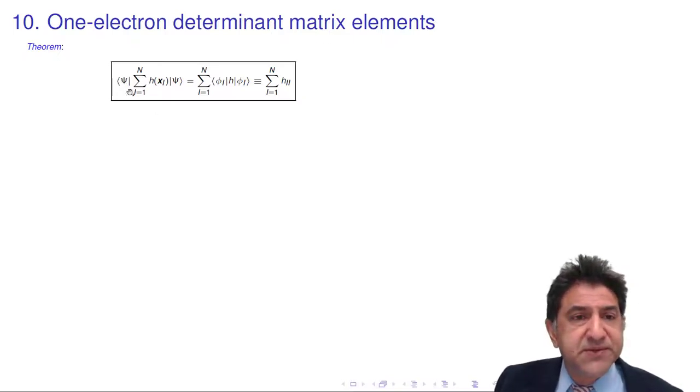So here they are. Here's the determinant wave function matrix element psi times a one-electron operator. You can see here h, it doesn't matter what this function is, it could be kinetic energy or nuclear attraction energy, or even both. The key point is that it's a function of one of the electron coordinates xi, and this is summed over all electrons and integrated with psi again.